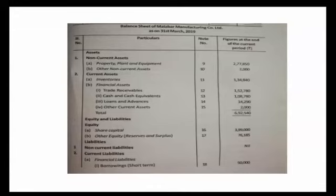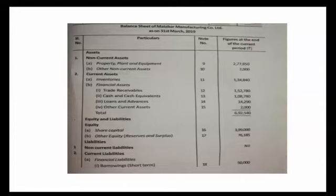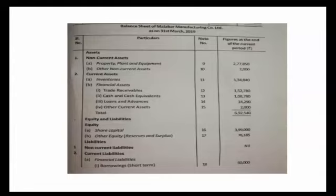Current assets. Inventory — Note No. 11. Closing stock: 1,24,840. Loose tools: 10,000. Balance inventory: 1,34,840. Financial assets — trade receivables — Note No. 12. Trade receivables: 1,64,400, less provision for doubtful debtors of 1,500 and provision for discount on debtors of 3,120. Adjusted balance of trade receivables: 1,52,780.